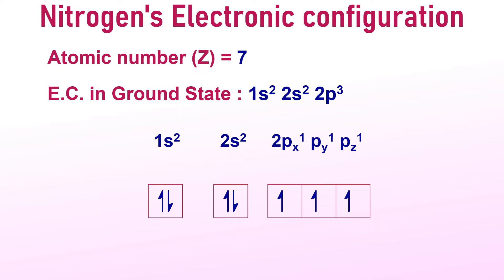This configuration reveals five valence electrons of which only three are unpaired, allowing nitrogen to form three covalent bonds. However, before participating in the bond formation, nitrogen undergoes hybridization to enhance the stability of the molecule.